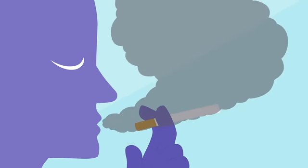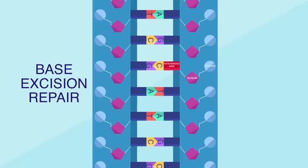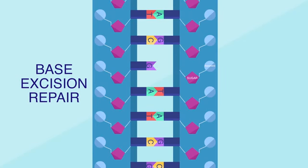Because DNA provides the blueprint for the proteins your cells need to function, damage causes serious problems, such as cancer. The errors come in different forms. Sometimes nucleotides — DNA's building blocks — get damaged. Other times nucleotides get matched up incorrectly, causing mutations.